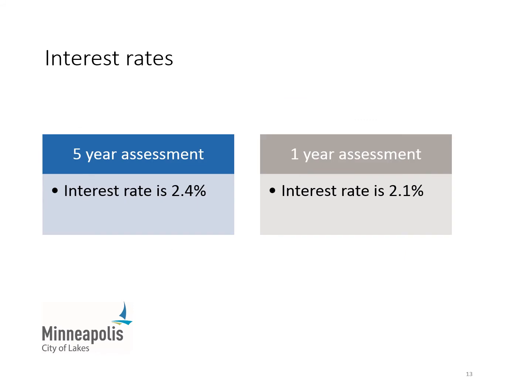Once they are levied, simple interest is added to the assessments at a rate tied to the sale of municipal bonds used to fund the project. This interest rate is calculated by the Minneapolis Finance Department. The current interest rate for five-year assessments to be levied in 2022 is 2.4%. The rate for one-year assessments to be levied in 2022 is 2.1%. The interest is calculated based on the unpaid balance, so the interest amount decreases slightly each year.